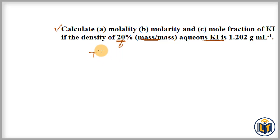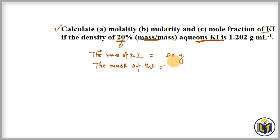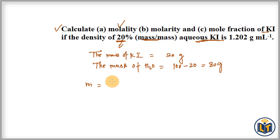Mass of solute — KI (potassium iodide) — is 20 grams. Mass of solvent — water (H₂O), because it is an aqueous solution — we subtract 20 from 100, which gives us 80 grams. Now we can calculate molality, because the molality formula is: molality equals moles of solute divided by the mass of solvent in kg.